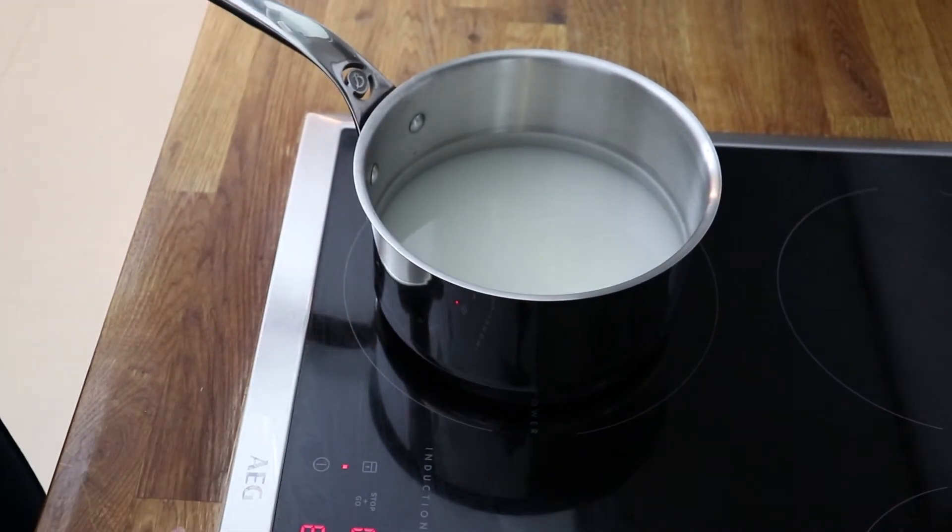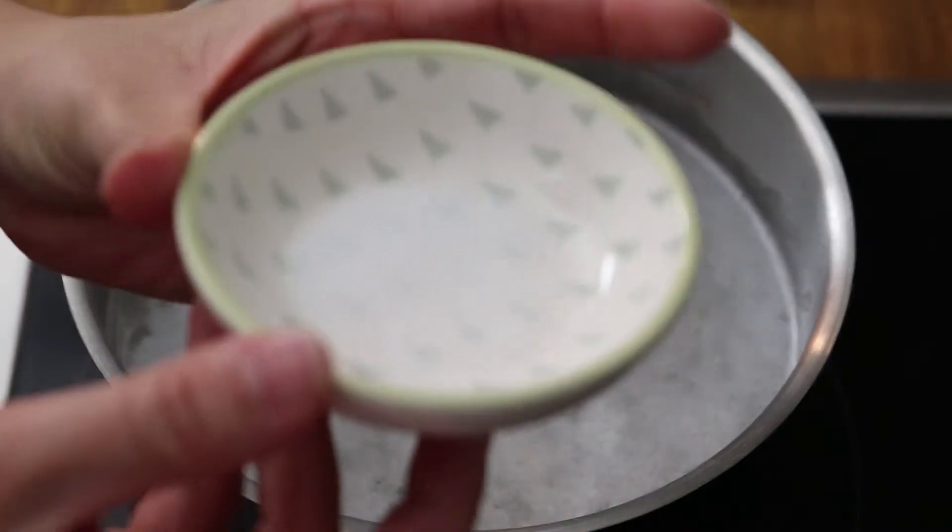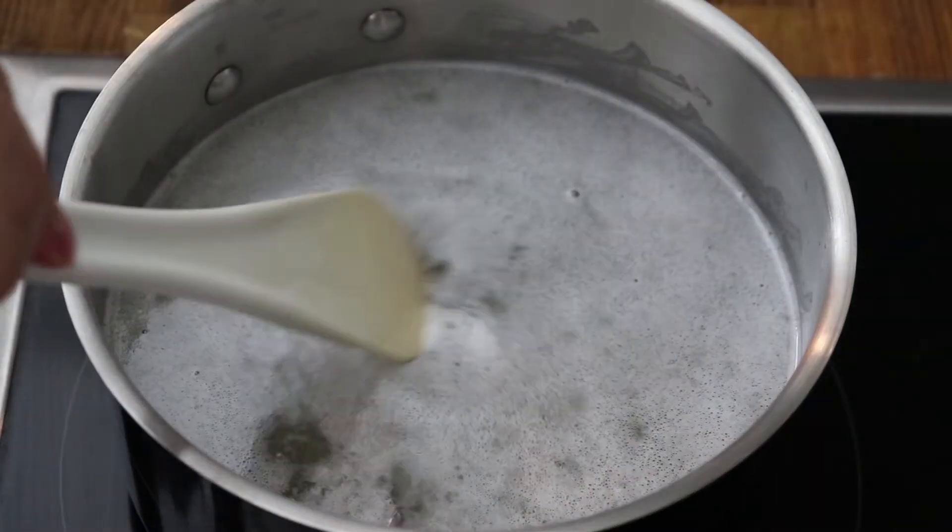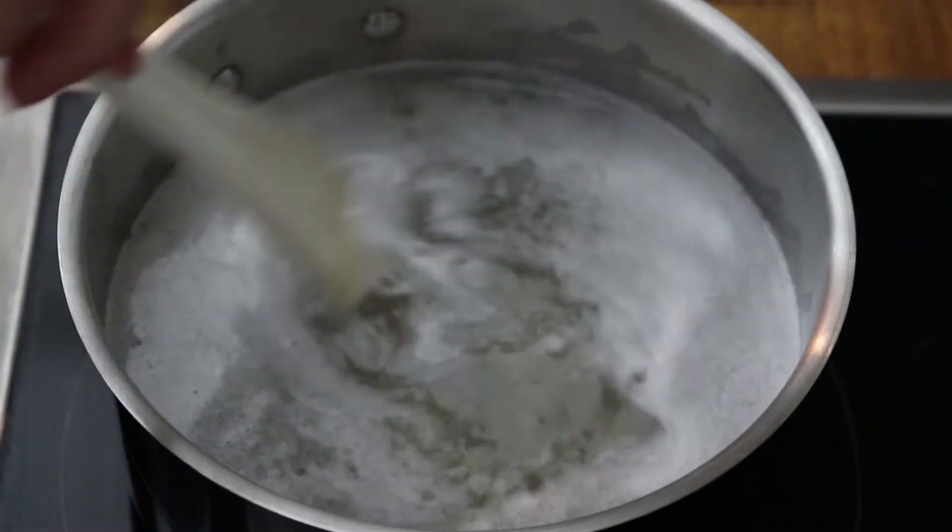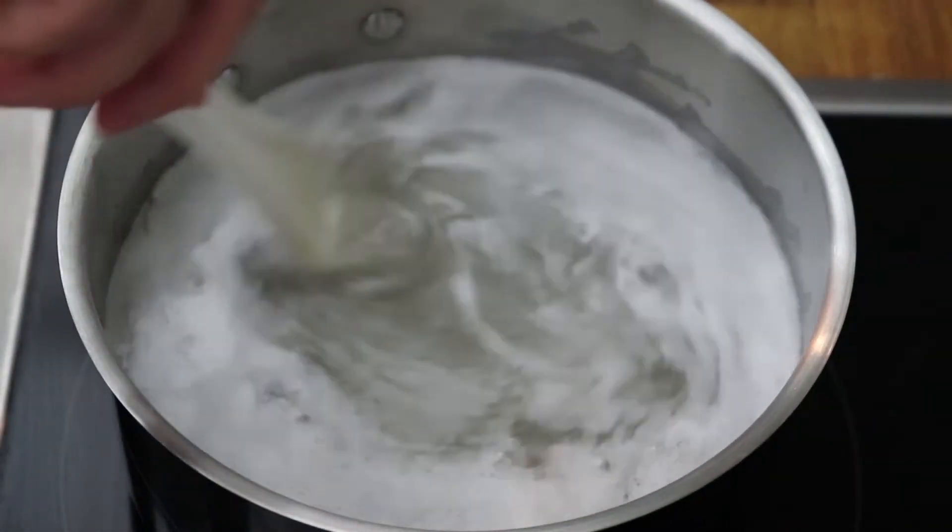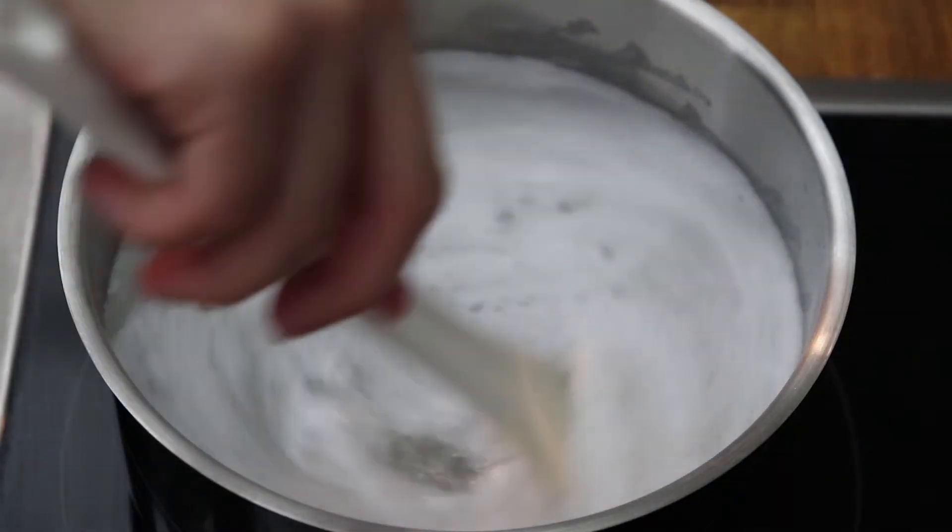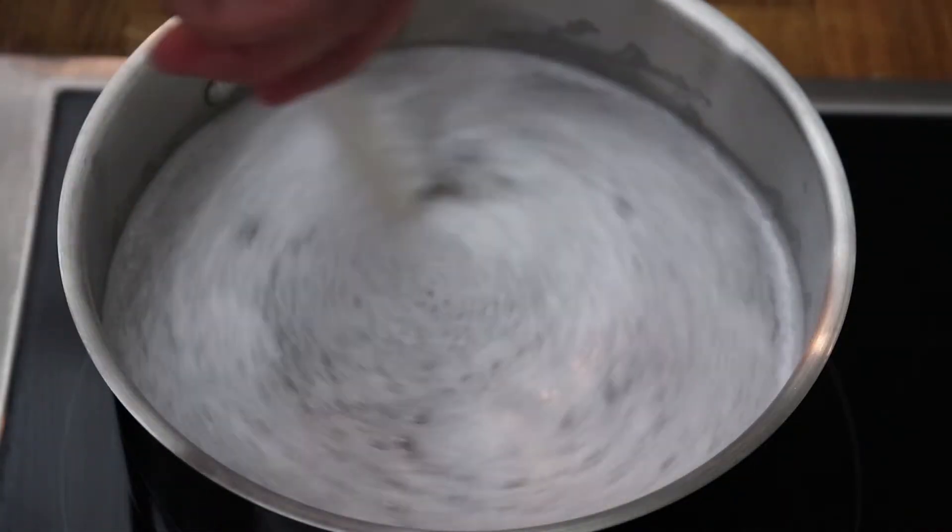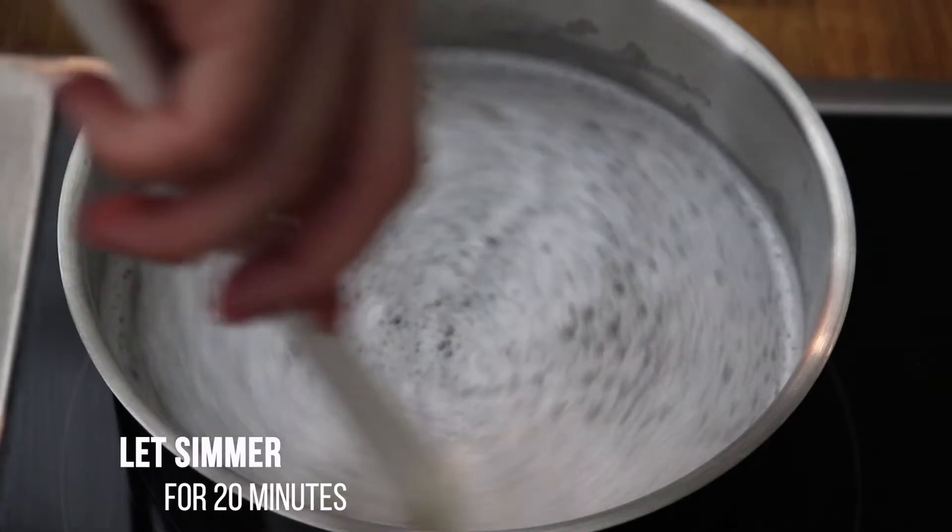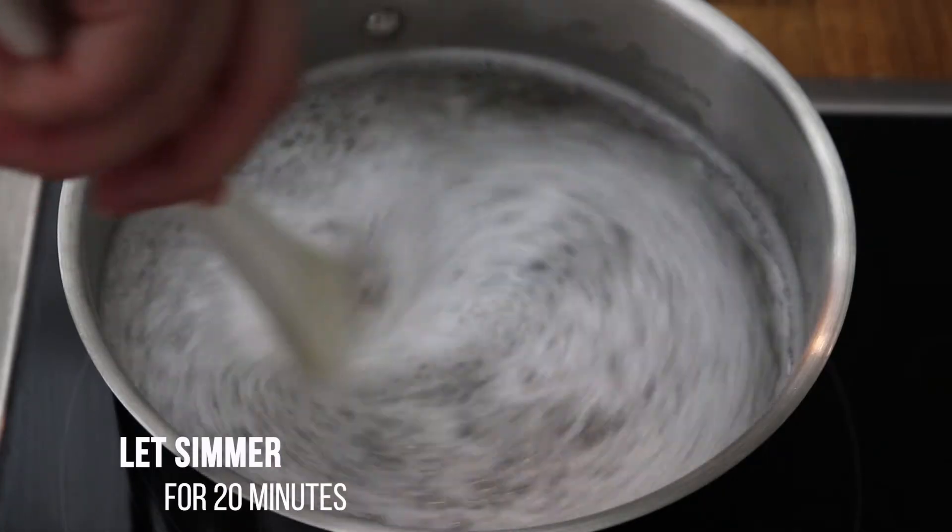And once this comes to a boil, you can add the citric acid, which combined with the heat of the syrup will trigger the chemical reaction that we're looking for. And we're gonna let this simmer on low heat for about 20 minutes until we reach a specific temperature.